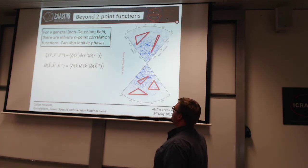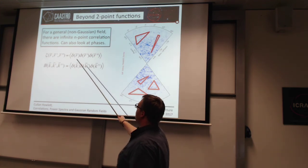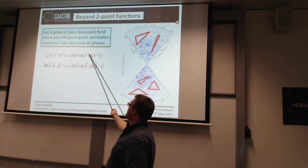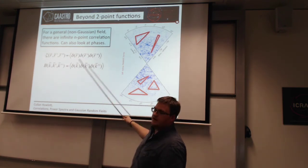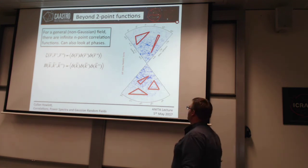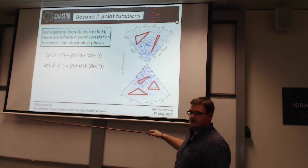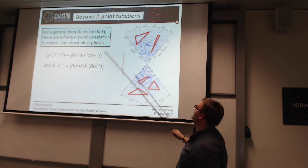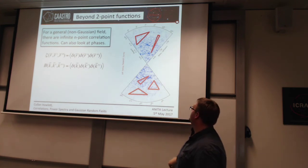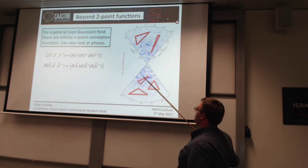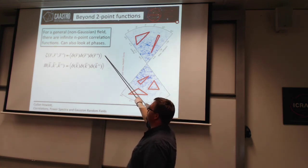These higher order functions can be written in very similar ways to the power spectrum and correlation function. But instead of looking at our observable at one location and another location and seeing how those two things are correlated, we now look at how three different locations are correlated. In terms of galaxies or sunspots, instead of drawing lines and asking the chance of finding something at either end, you throw down triangles and ask what's the chance of finding an object here and here and here simultaneously, for different triangle configurations. In real space this is the three-point correlation function; in Fourier space this is called the bispectrum.